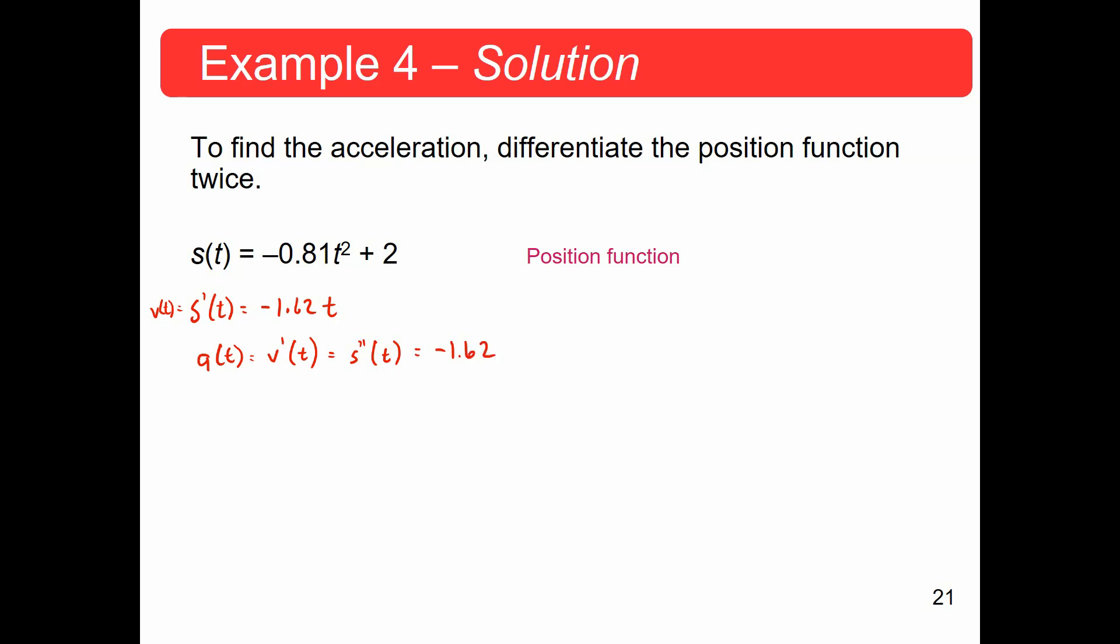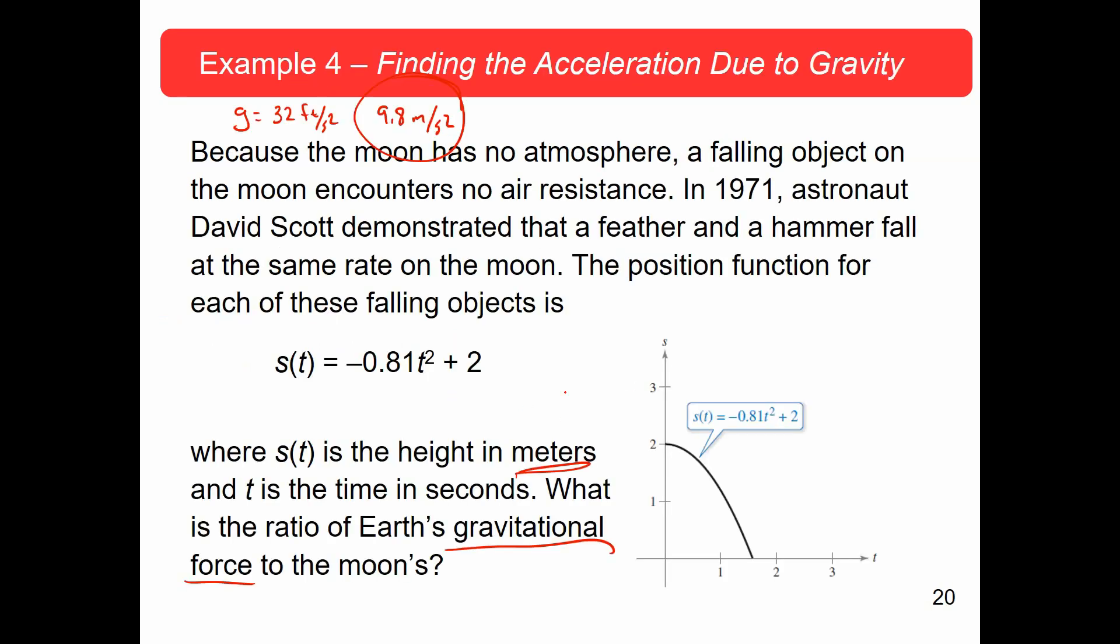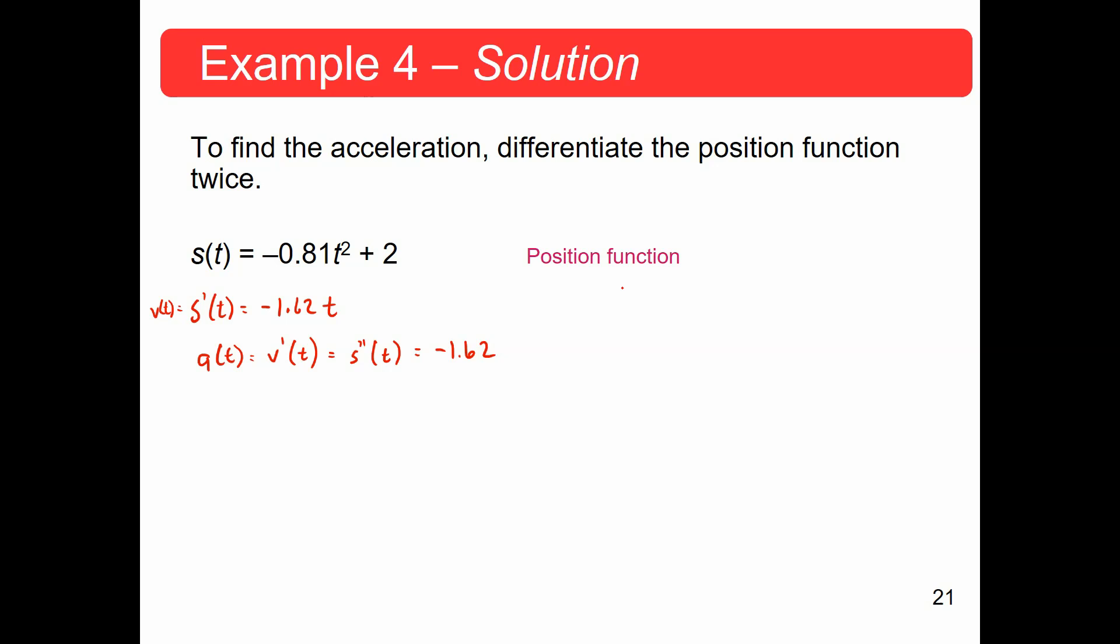So, that gives us the acceleration on the moon. So, the question asks for the ratio of Earth to the moon. So, Earth is 9.8 and that acceleration, that negative means going down. So, 9.8 versus 1.62. We can simplify that down. Let's see what we get. 9.8 divided by 1.62. Roughly 6 times the gravity, 6.04 over 1.